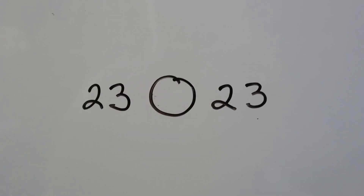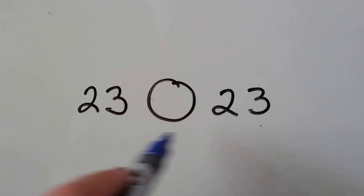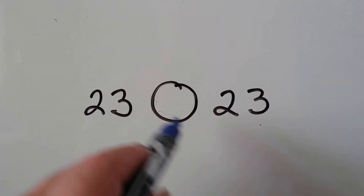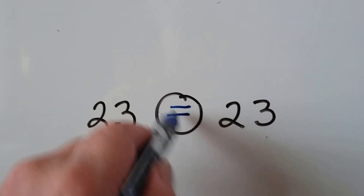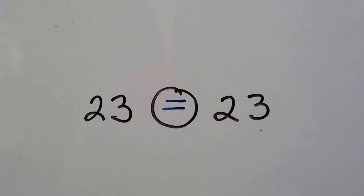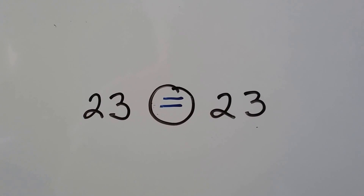Now we have 23 and 23. Well, that's the same number. Equal to means that they are the same — they are equal to each other.